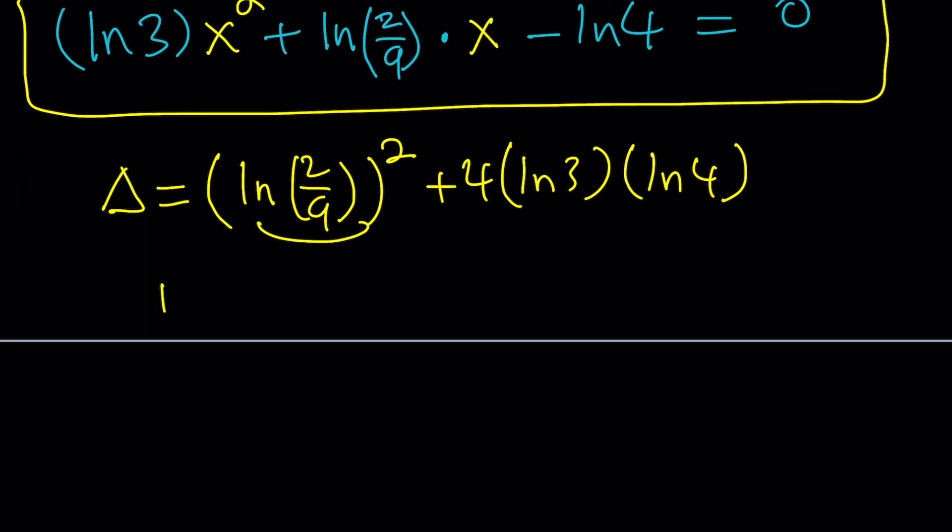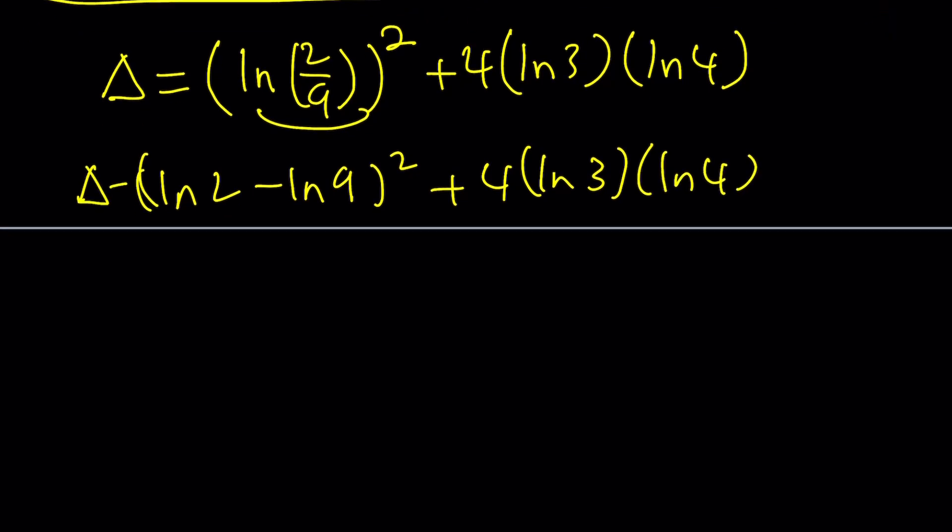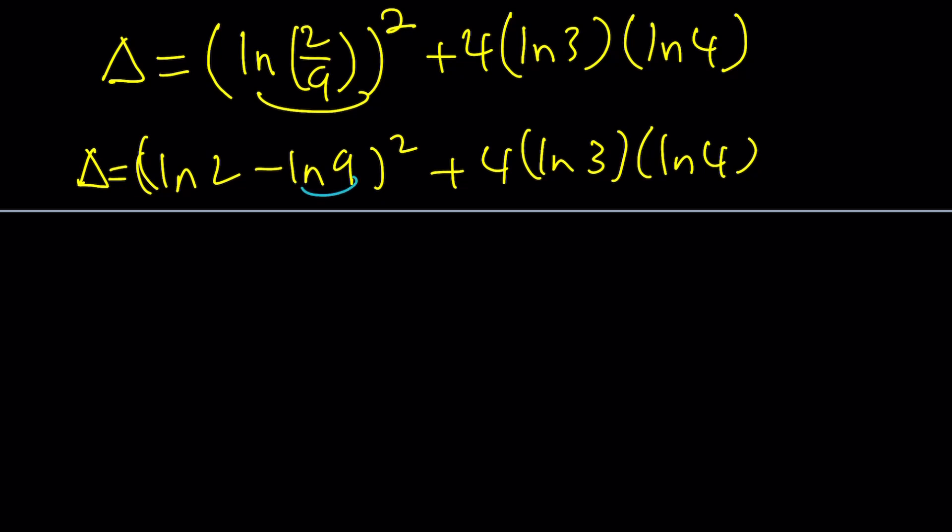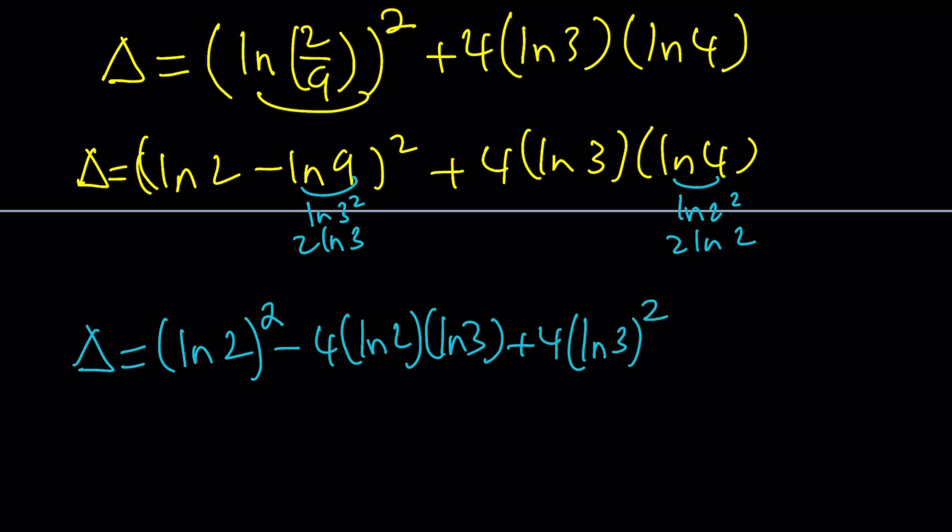ln 2 over 9 is, again, we're going to break it down. ln 2 minus ln 9 squared plus 4 times ln 3 times ln 4. Now, I want to simplify this, and this is good because if you didn't do this, then you would have to write it every time you write the quadratic formula. That would be kind of boring. Now, we can actually write this as ln 3 squared, which turns into 2 ln 3. And this can be written as ln 2 squared, which turns into 2 ln 2. Let's consider all those. And now, I'm going to be squaring ln 2 minus 2 ln 3, which gives me the following.